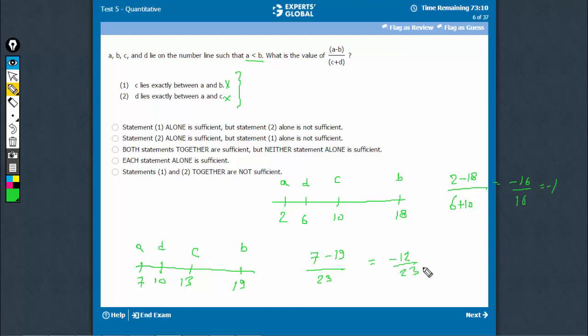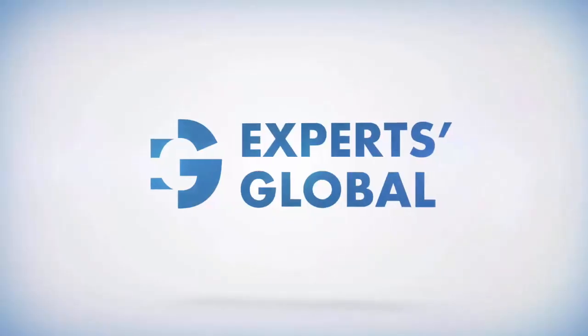minus 12 upon 23. So, even combining doesn't lead to a unique answer. The answer is option E.